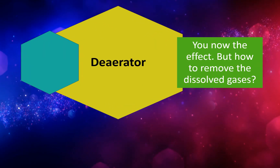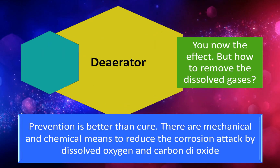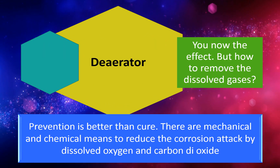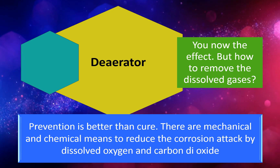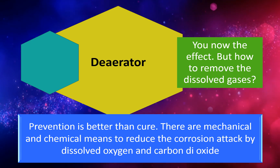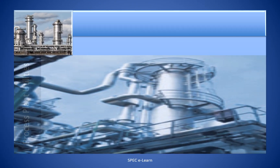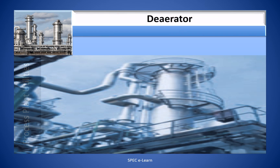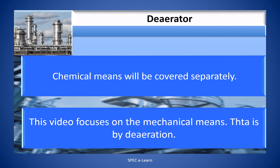Now you know the effect, but how do you remove the dissolved gases? Prevention is better than cure. There are mechanical and chemical means to reduce corrosion attack by dissolved oxygen and carbon dioxide. Chemical means will be covered separately. This video focuses on the mechanical means, that is, by de-aeration.